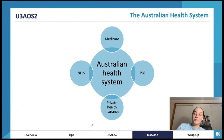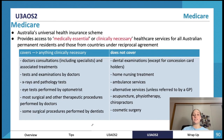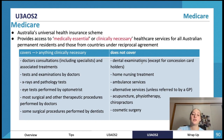Now the healthcare system. Medicare is Australia's universal health insurance scheme, providing access to medically essential or clinically necessary healthcare services to all Australians and those from countries with a reciprocal agreement. Medicare covers GP consultations, tests, examinations, X-rays, pathology tests, optometry, eye tests, and some surgeries. It does not cover dental examinations, home nursing, ambulance, cosmetic surgery, physiotherapy, or chiropractors. Make sure you're familiar with what it does and doesn't cover.